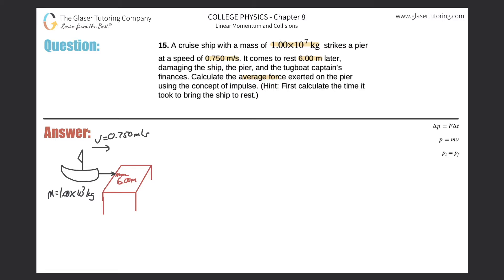It takes six meters for the cruise ship to come to rest. We know that the final velocity of the ship is going to be zero meters per second. So if we now take a look at what we need to know in order to solve this question, we're thinking about impulse.